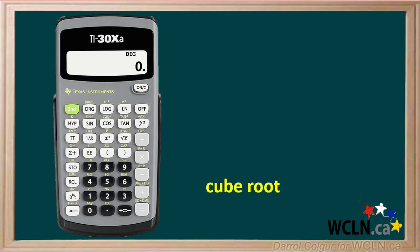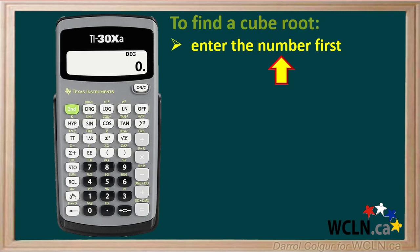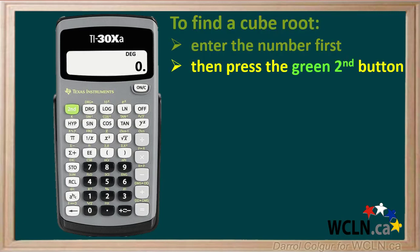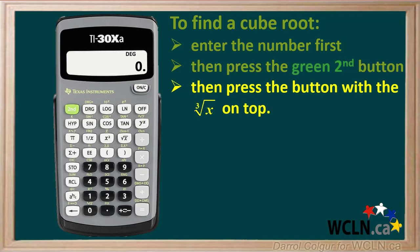The cube root on this calculator is a second function right above the zero on the number pad. So to find the cube root of a number using this calculator, enter the number first. Then press the green second button up here. Next, press the button with the cube root of x on top, which is the zero button.